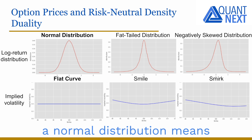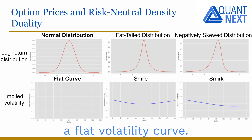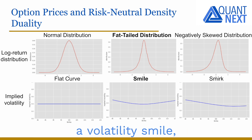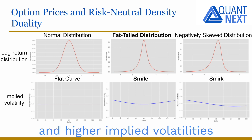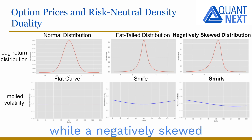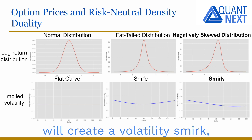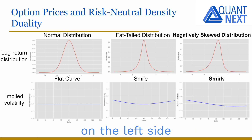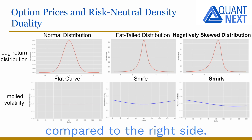A normal distribution means a flat volatility curve. A fat-tailed distribution creates a volatility smile with higher tail risk and higher implied volatilities on the right and on the left side. While a negatively skewed return distribution will create a volatility smirk with higher implied volatilities on the left side compared to the right side.